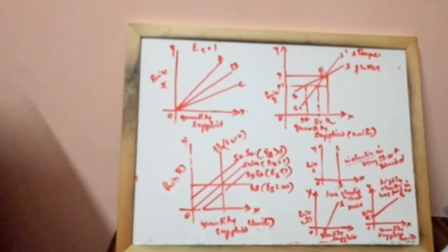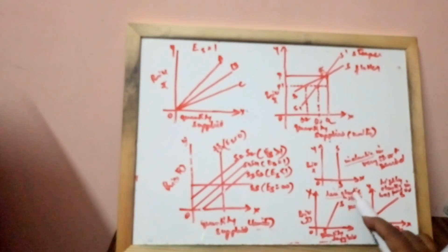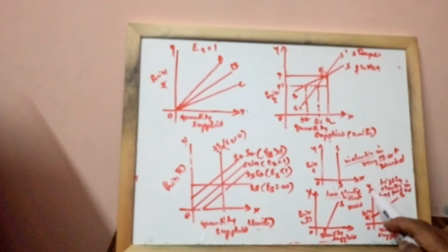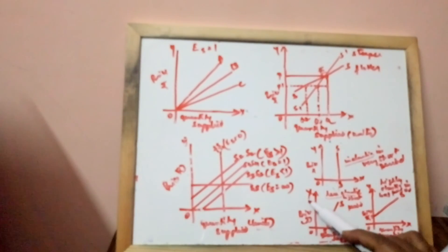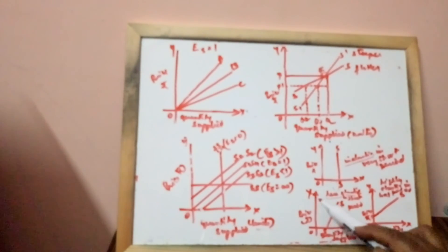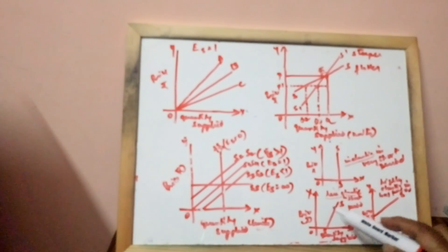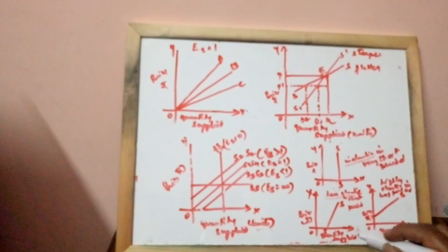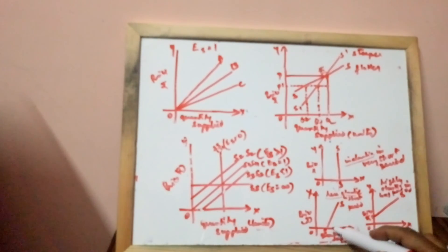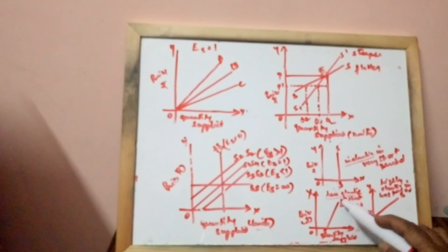Supply is less elastic in the short period. The quantity supplied is represented on the X-axis and price on the Y-axis. The short period refers to a period in which output can be changed by changing only variable factors. Therefore, supply is less responsive to changes in demand, and the supply curve is less elastic in the short period.